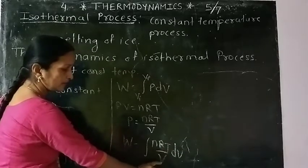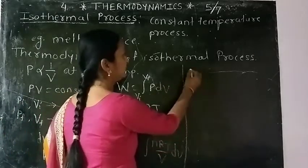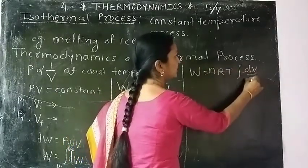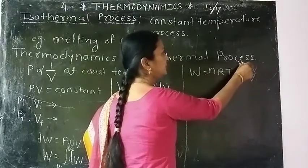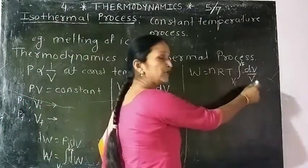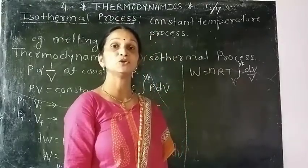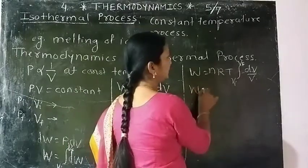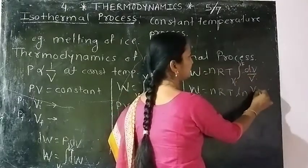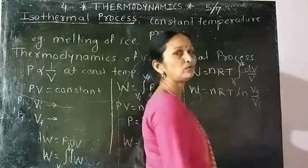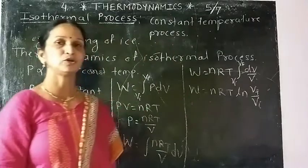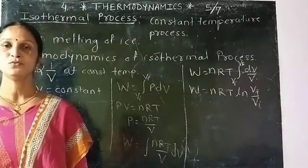Taking NRT outside the integration sign, W = NRT · ∫(1/V) dV from V_I to V_F. Since the integral of 1/V is ln V, we get W = NRT · ln(V_F/V_I). This is the expression for work done during isothermal change from volume V_I to V_F.